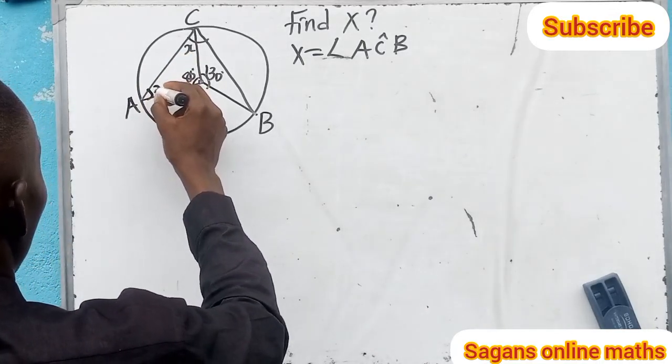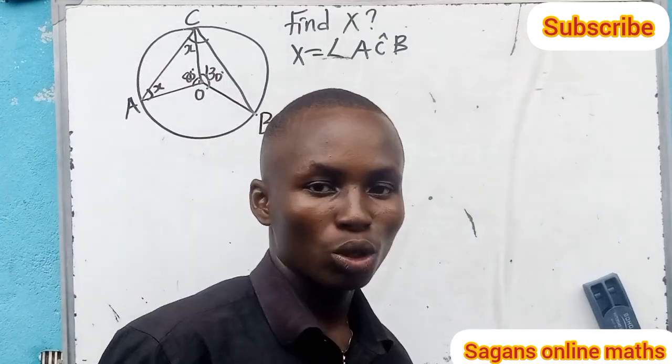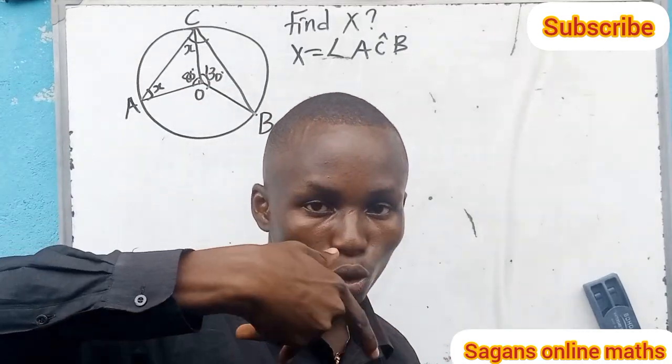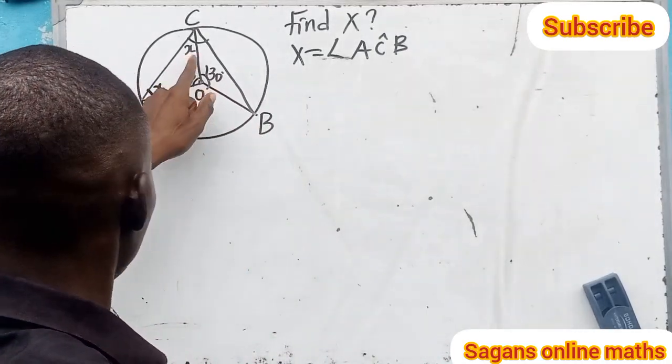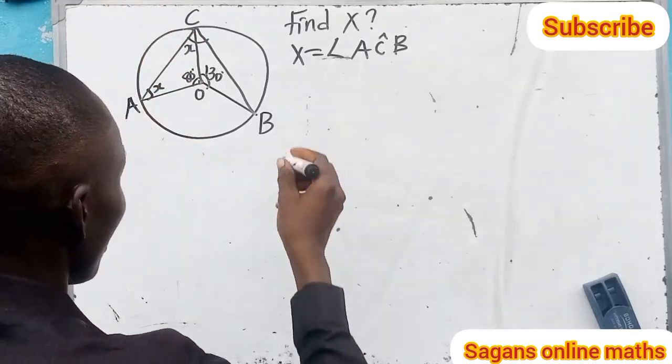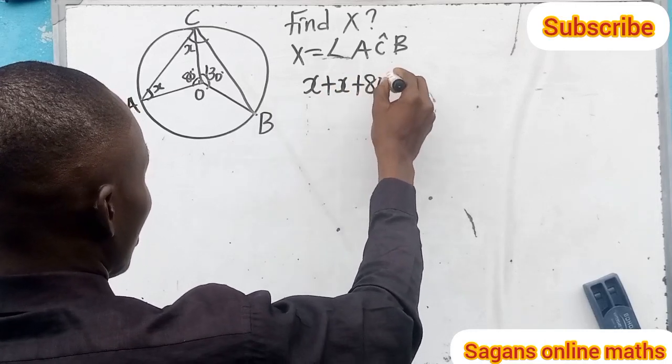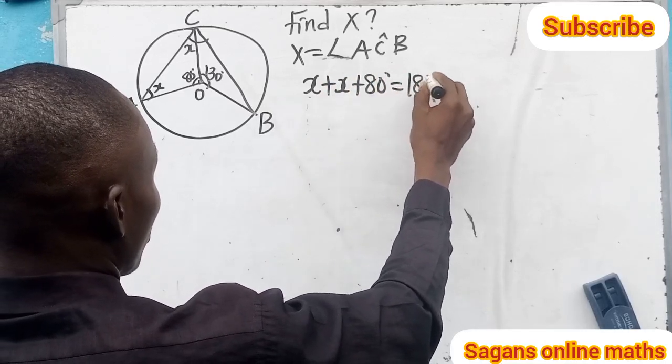Remember, in an isosceles triangle, the base angles are equal. That means if here is x, then here will be x. And the sum of angles in this isosceles triangle is 180 degrees. So that means x plus x plus 180 degrees equals 180 degrees.